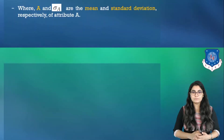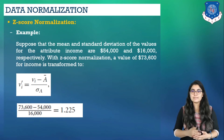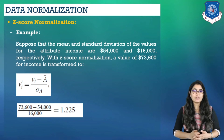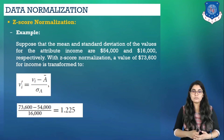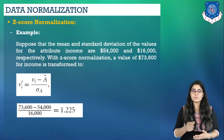Suppose that the mean and standard deviation of the values for the attribute income are $54,000 and $16,000 respectively. With Z-score normalization, we want to normalize the value $73,600 for attribute income. By putting the values in the formula, we get the answer 1.225. Here VI is $73,600, Ā is the mean value of the attribute income, and σ_A is the standard deviation of the attribute income. The normalized value VI' is 1.225 after applying Z-score normalization.